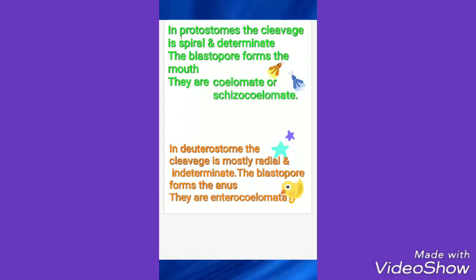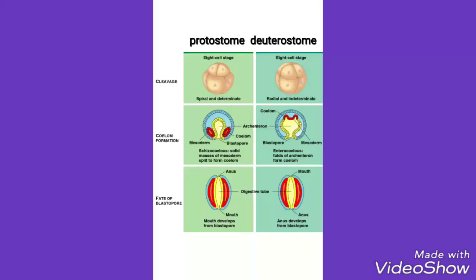Here I have a diagram of the development of protostomes and deuterostomes. In protostomes, cleavage is determinate, meaning the developmental fate of each cell in the adult organism has already been determined. In indeterminate cleavage, each cell of the eight-cell embryo, if separated, remains capable of developing as a complete organism. The coelom forms by solid mesoderm in protostomes, and in deuterostomes it forms from folds of the archenteron.